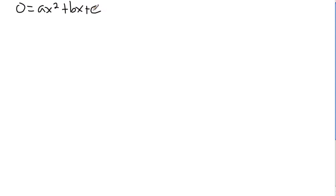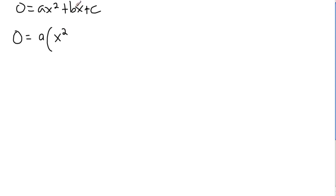We're going to start with 0 equals ax squared plus bx plus c. To complete the square, we first take out any common factor of x squared and x. So I'm going to take out an a from both of those terms. That means I'm left with x squared plus b over a times x inside the parentheses.